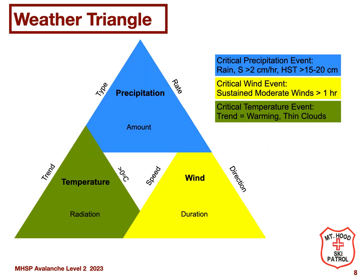What parameters do we need to look at when assessing weather and its impact on avalanche risk? The weather triangle is a helpful model to keep in mind when thinking about weather. It combines the three elements of weather — precipitation, wind, and temperature — and for each element, the key parameters that affect avalanche risk are identified.